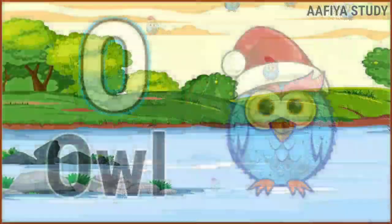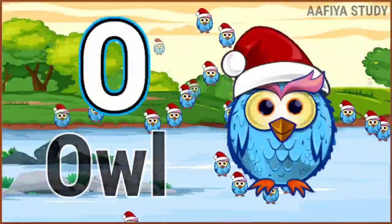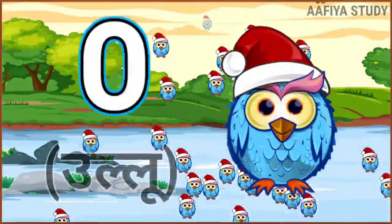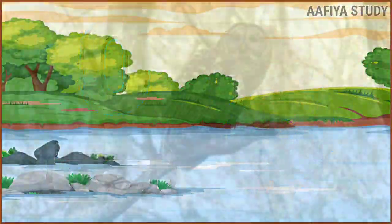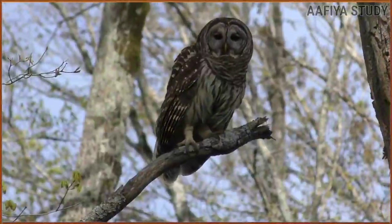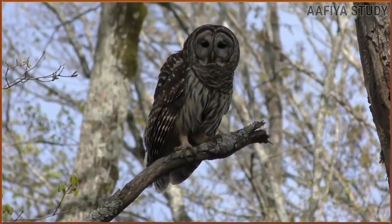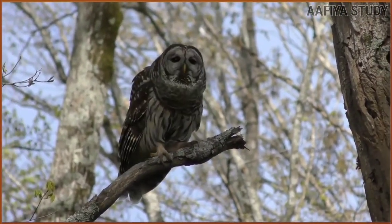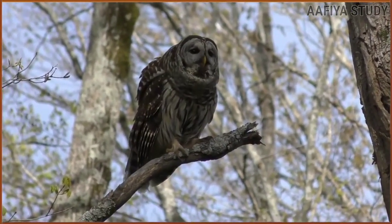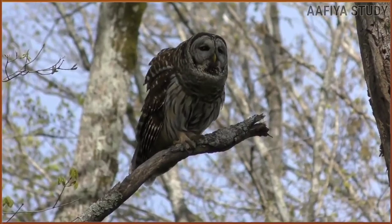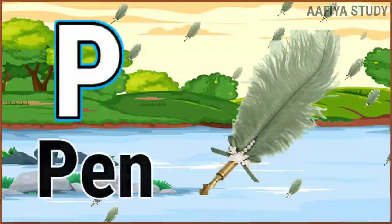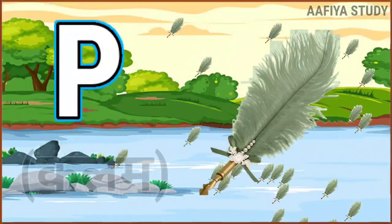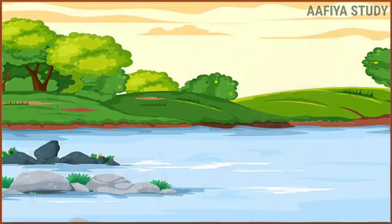O for owl, owl means ullu. P for pen, pen means kalam.